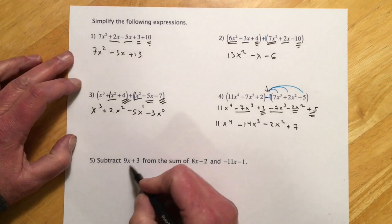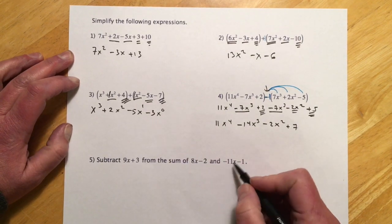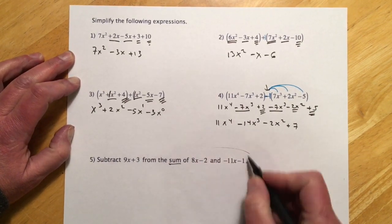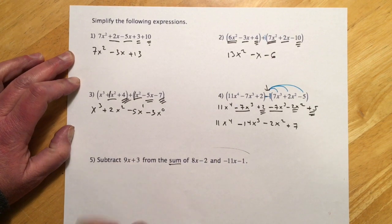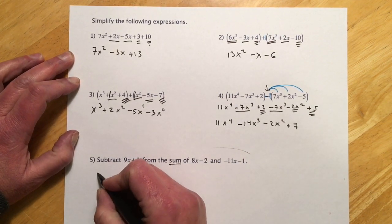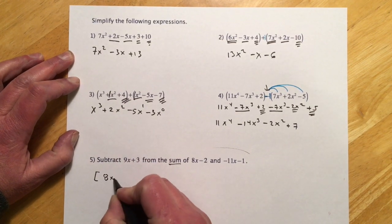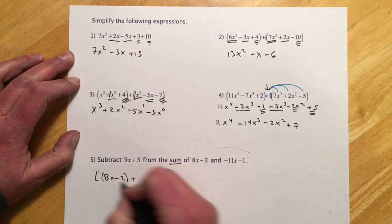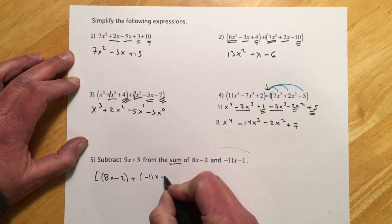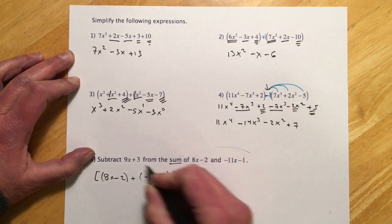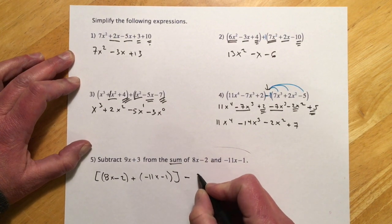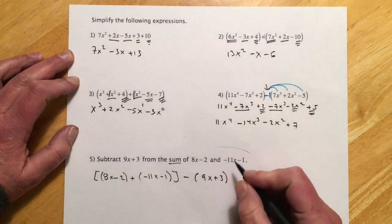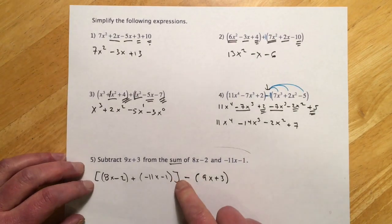This one, so subtract 9x plus 3 from the sum of 8x minus 2 and negative 11x minus 1. So we're going to add these two. That's the sum, so we're going to find the sum of this, and then we're going to subtract this bit from it. So this I'm going to do as 8x minus 2. It's a sum, so I'm not going to use the extra parentheses, because I guess I am, because this has a negative, so let me write it right. And then subtract this from that sum. So minus, that will need parentheses, 9x plus 3.